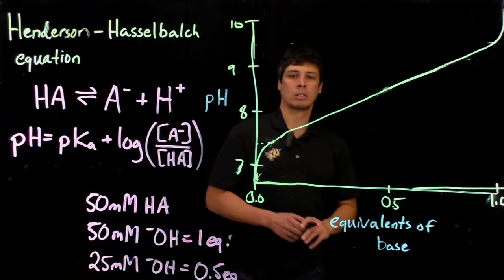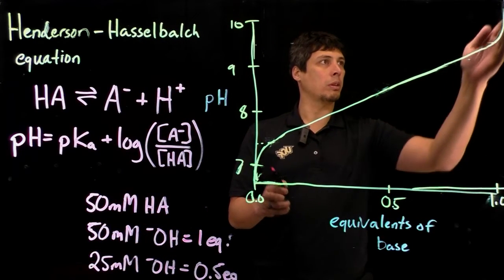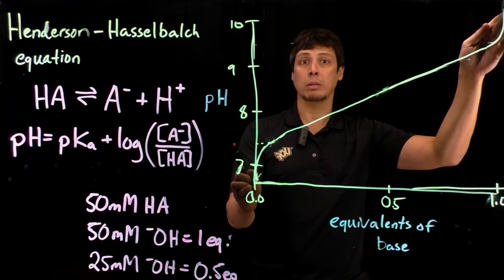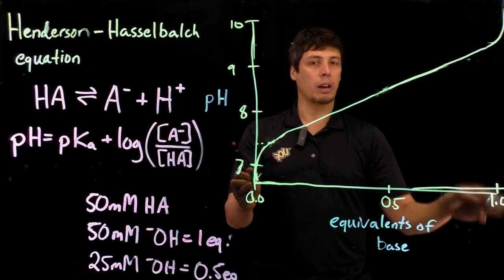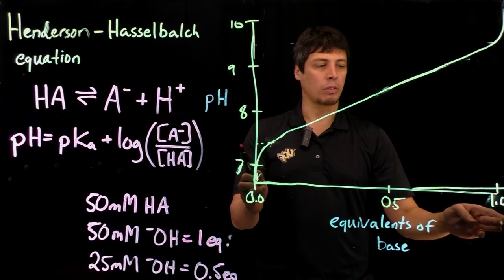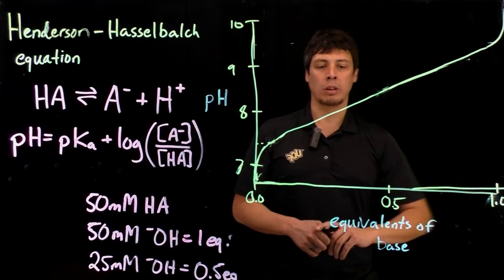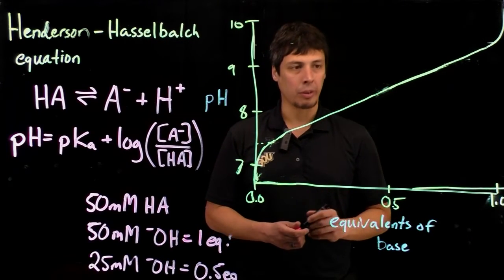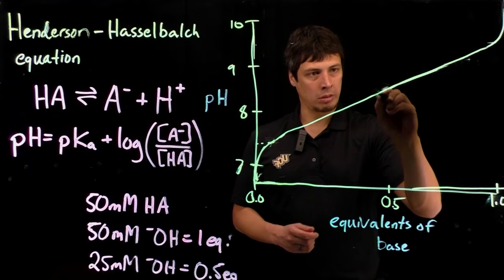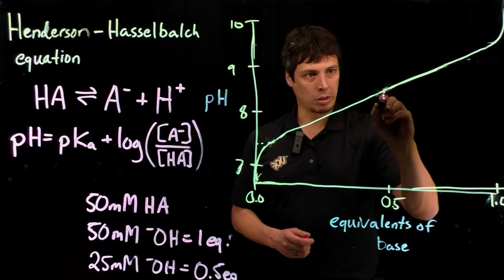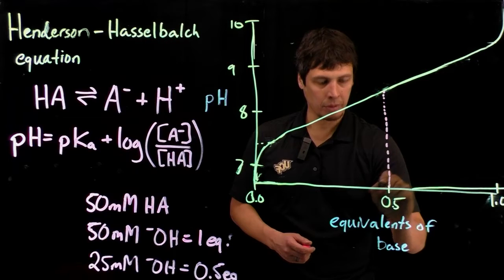We have what's called an equivalence point, where you see this asymptotic behavior at where the equivalent is 1.0, 0.0, and you have the half equivalence point, which is also very important, because this is how you determine what the pKa is.